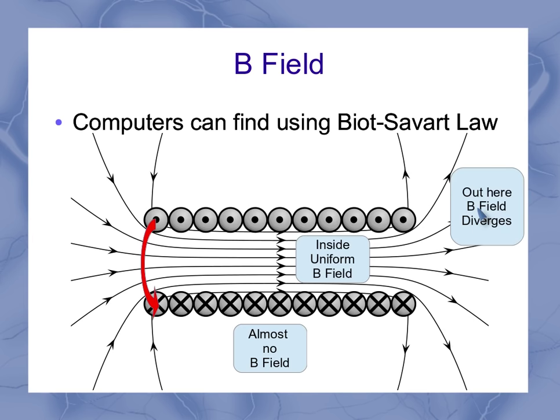Over here on the edges, that uniform field starts to diverge as it's going out. So while it's really uniform inside the solenoid, as soon as you get up towards the edge of the solenoid, you start to see those magnetic field lines spreading apart. But in general, it comes out one side and back in the other side, and you've got a uniform magnetic field in the region in between.